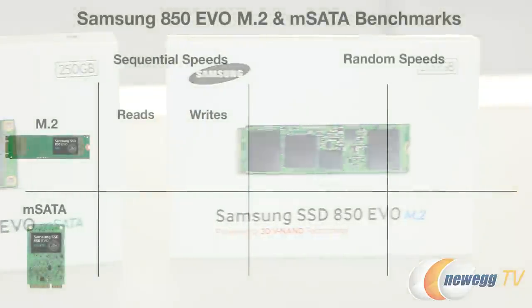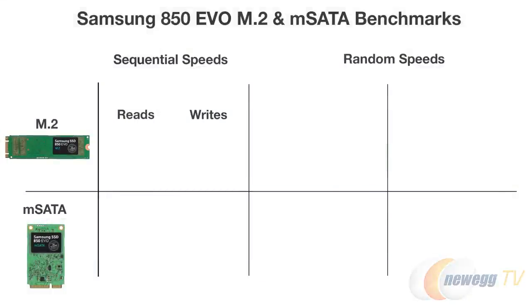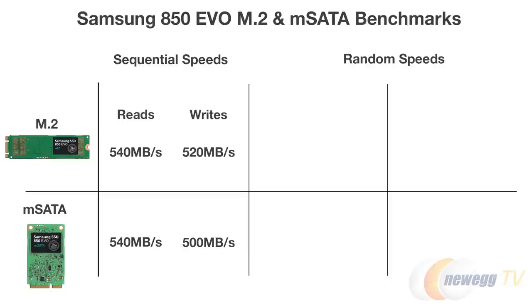According to Samsung, performance-wise they are both able to push 540 megabytes per second on sequential reads. The M.2 version however has slightly faster writes at 520 megabytes per second versus the mSATA version at 500 megabytes per second.